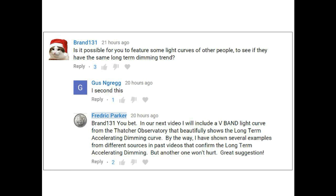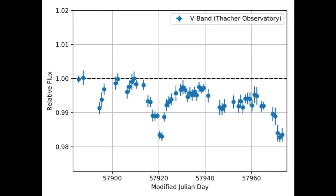Today we will show you a light curve of Tabby Star from the Thatcher Observatory, taken in the v-band. This light curve has not been detrended, the data has not been selectively manipulated, and there were no hot pixels in the focal plane array. This is a pristine light curve of Tabby Star — untouched and nothing hidden.